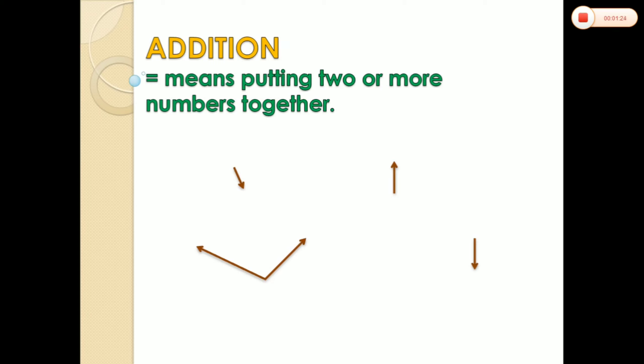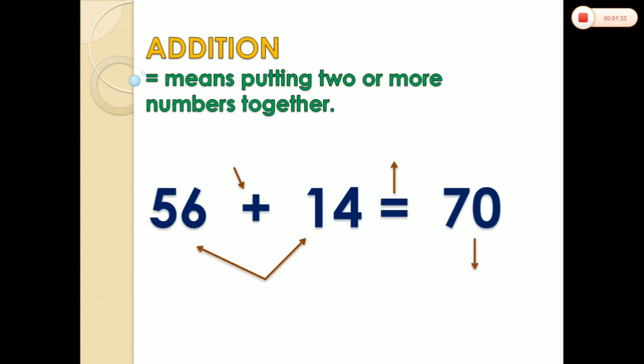Now, in addition, they have their own parts. Let's see. We have an example of 56 plus 14 equals 17. Now, let's talk about their parts. The first one is addends. These two numbers, 56 and 14, we call that one addends.